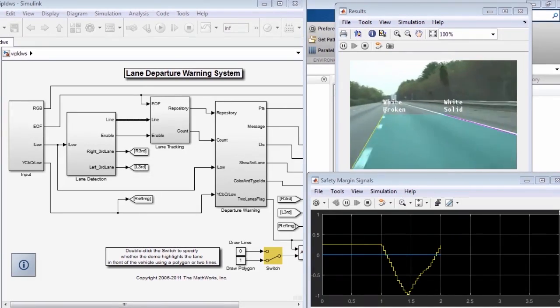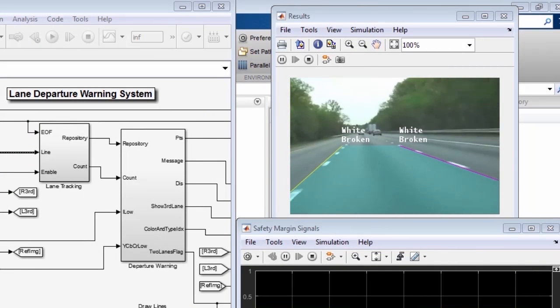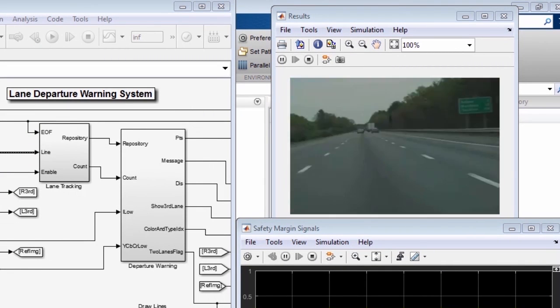The term computer vision refers to using video to detect, classify, and track objects or events in order to understand a real-world scene. Here, you can see that the system detects lane markers to determine when a vehicle departs from its lane.